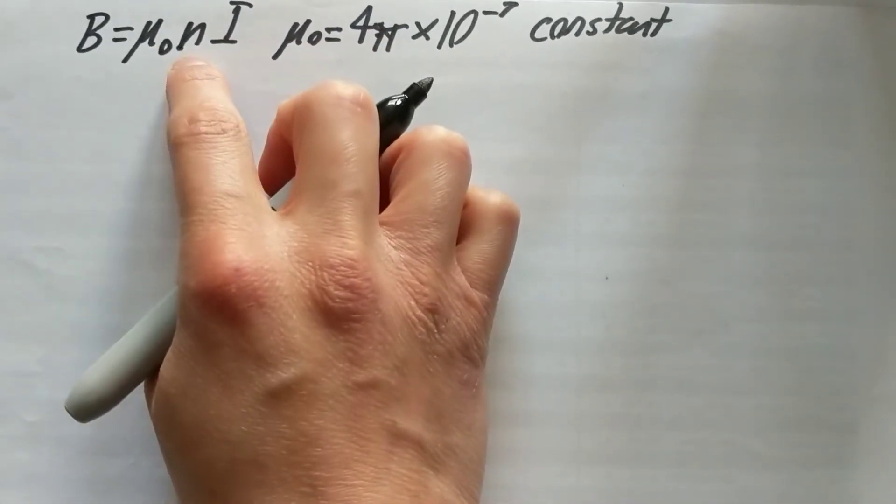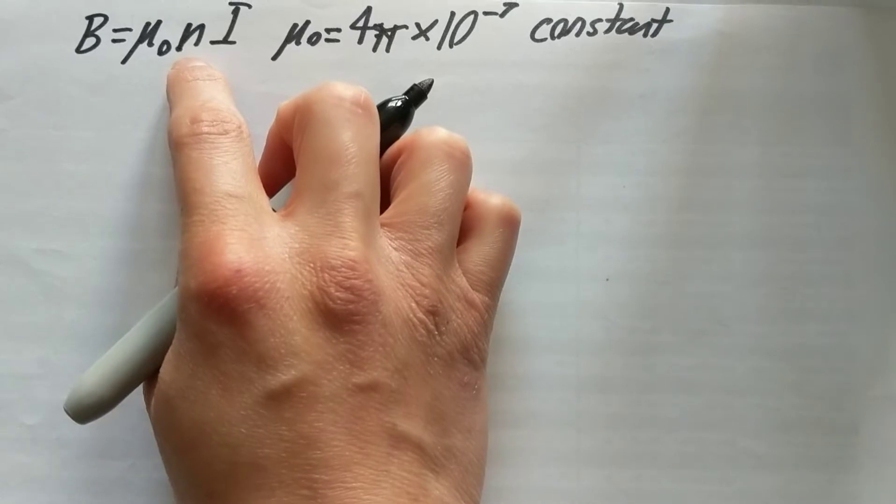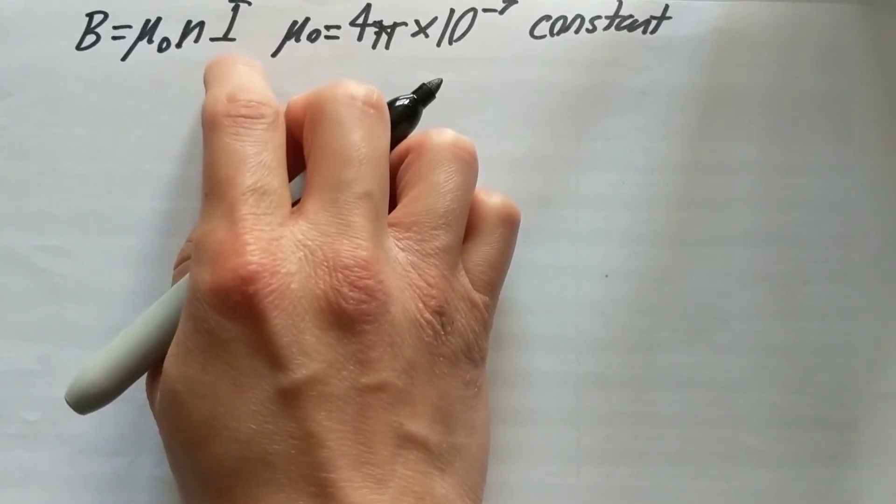n, which is going to be the coil density, and then i, which is your current.